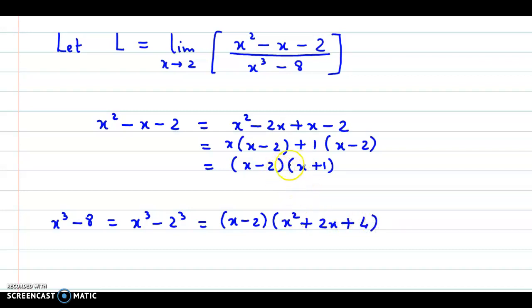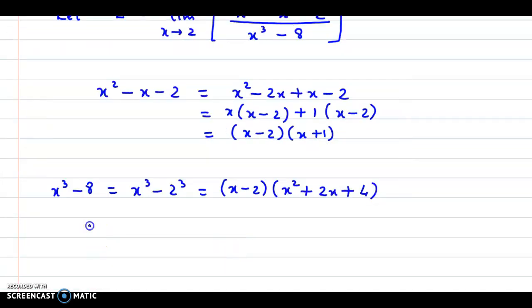We simply put these factors in the limit. Therefore, we have L is equal to limit as x approaches 2. In the numerator, the factors are x minus 2 and x plus 1, and in the denominator, we have factors x minus 2 and x squared plus 2x plus 4.